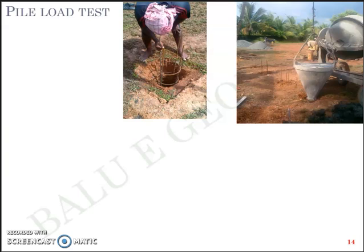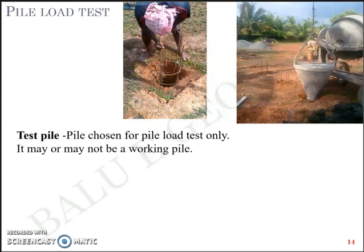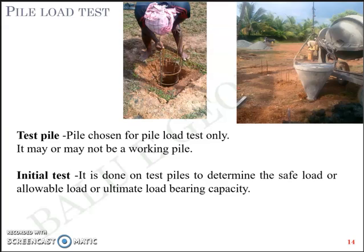Now the process of pile load test I'll briefly discuss here. You have what is called a test pile, which is a pile chosen for the pile load test exclusively — it may or may not be a working pile. There's another term called the initial test, which is done on test piles to determine the safe load, the allowable load, or the ultimate load capacity. These two terms — test pile and initial test — are quite popular in practice.